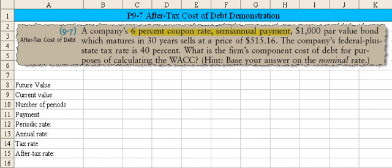The problem reads that a company's 6% coupon rate, semi-annual payment, $1,000 par value bond, which matures in 30 years, sells at a price of $515.16.